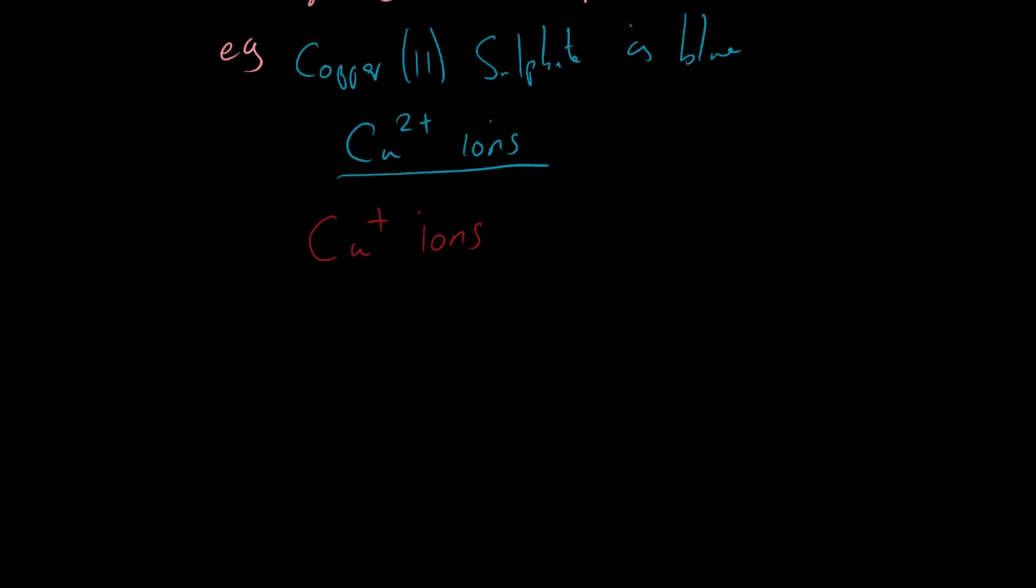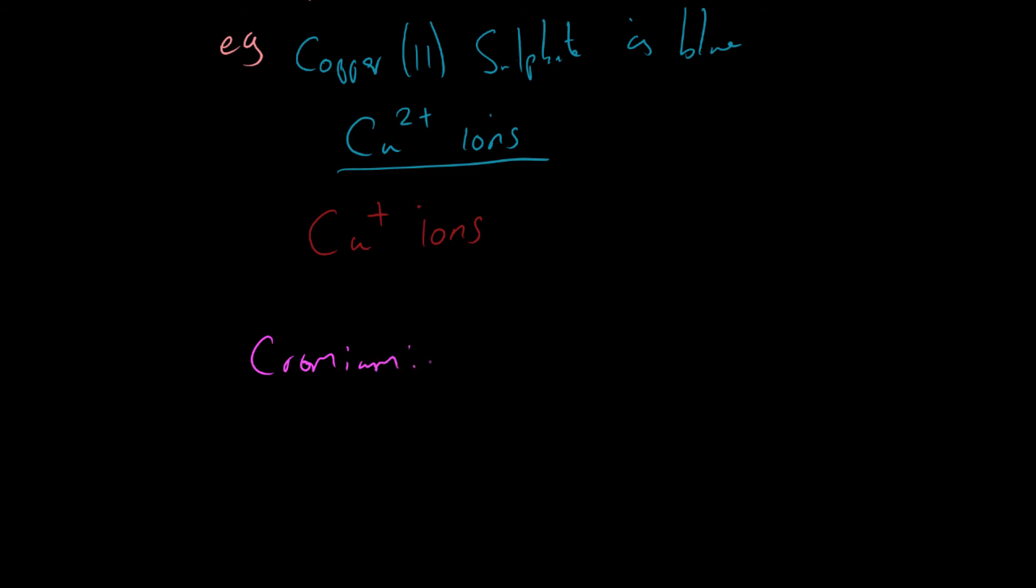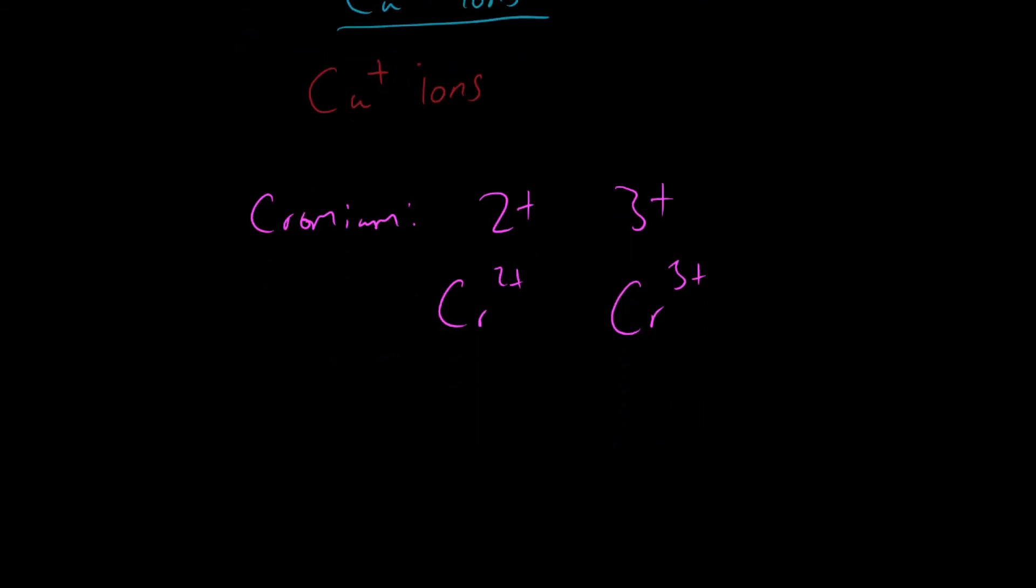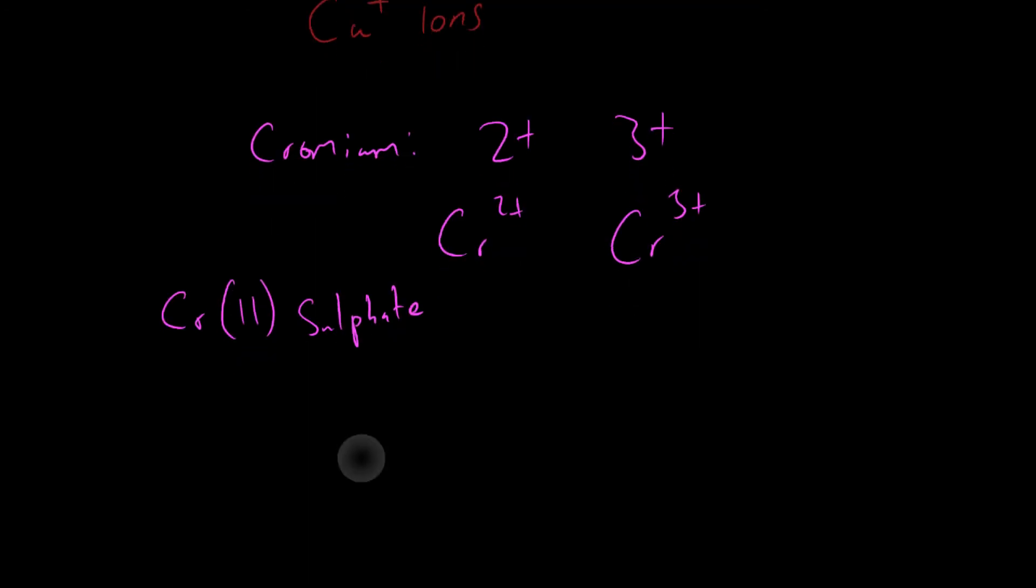For example, chromium. Chromium can form 2+ ions and 3+ ions. So we'd have Cr 2+ and Cr 3+. They are both chromium, but they have a different charge. And so let's just say, for example, you were forming chromium sulfate. You could form chromium 2 sulfate. You could also have something like chromium 3 oxide.